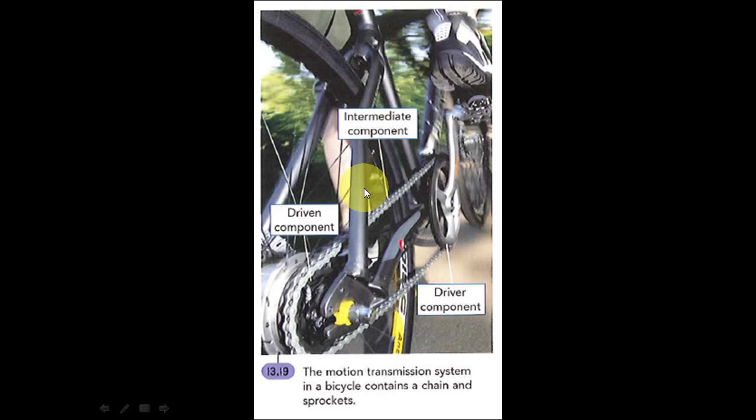Now here, before we get to that, let's look at this picture. A bike is probably the best example of a motion transmission system.